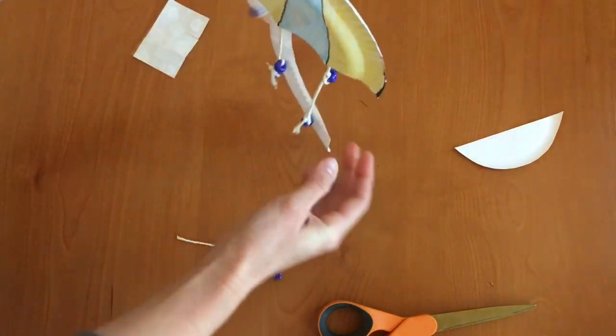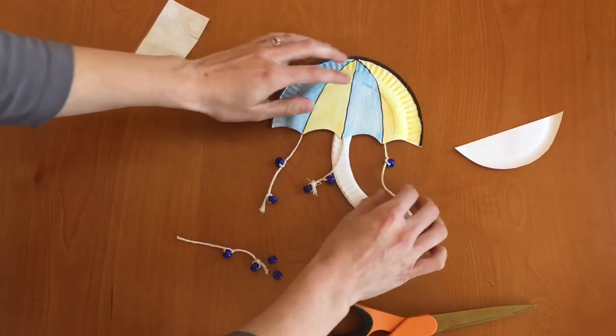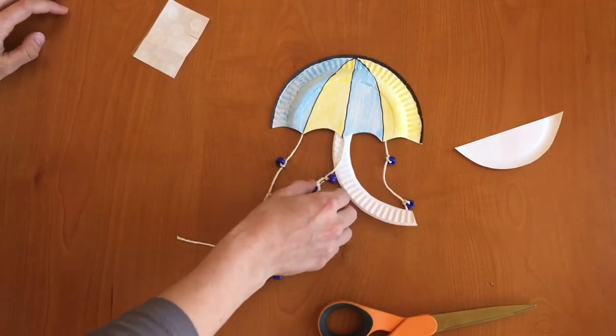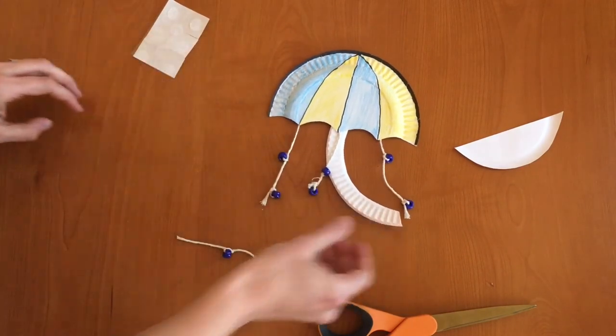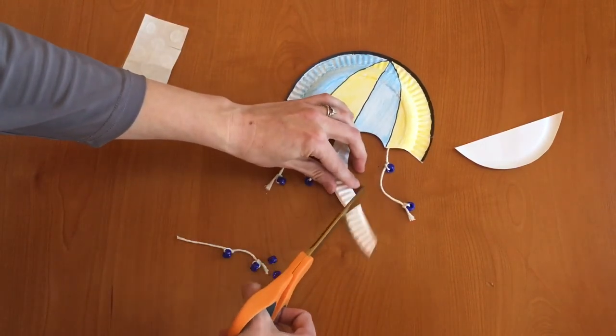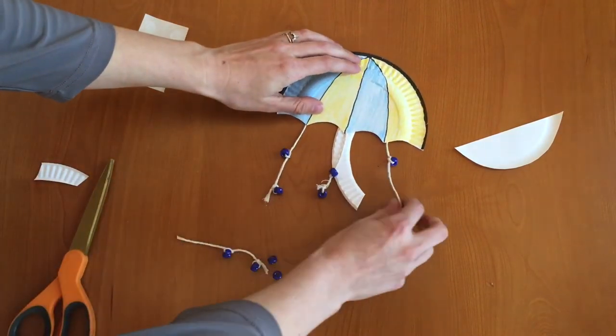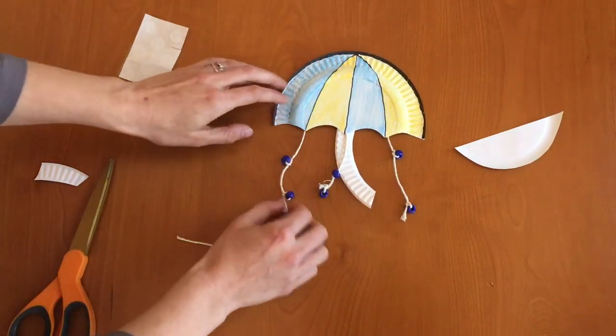And now if you turn it around, we have a cute little umbrella with blue beads that represent the rain coming down. You can trim up your handle a little bit like I did if you want. That way it's a little bit shorter and looks more like a real umbrella.